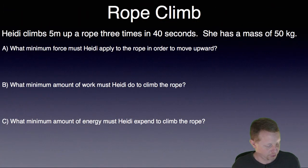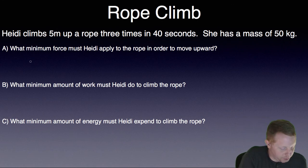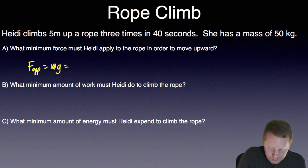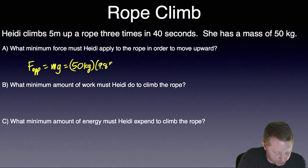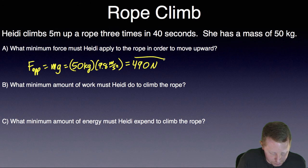What minimum force must Heidi apply to the rope in order to move upward? Well, once again, in order to move upward, she must apply a force that's at least equal to her weight. So that's going to be equal to mg. So the applied force that she has to apply is equal to her weight, which is 50 kilograms, times the acceleration due to gravity here on the surface of Earth, 9.8 meters per second squared, or right around 490 newtons.